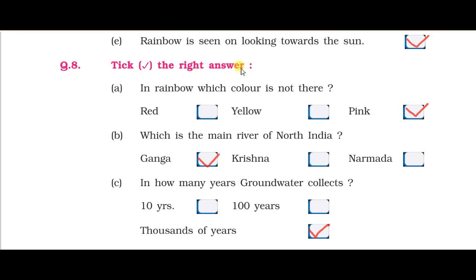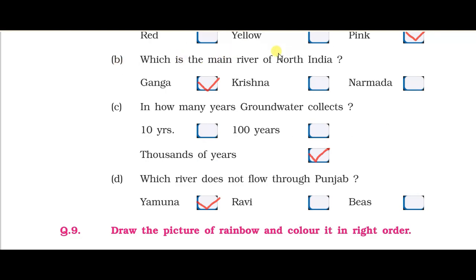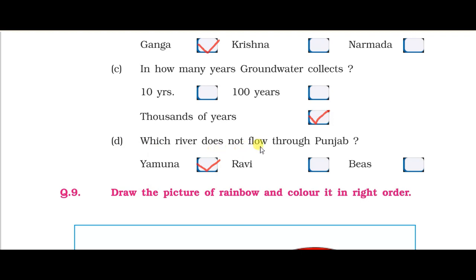Question eight — tick the right answer. First: which color is not in the rainbow? The answer is pink; pink is not in the rainbow, so tick pink. Next: which is the main river of north India? Jo uttarwarat hai uski mukhy nadi kaun si hai — answer is Ganga, tick here. Next: in how many years does ground water collect? Answer is thousands of years, tick here. Last: which river does not flow in Punjab? Ravi and Beas flow in Punjab; Yamuna does not flow in Punjab, so tick Yamuna.